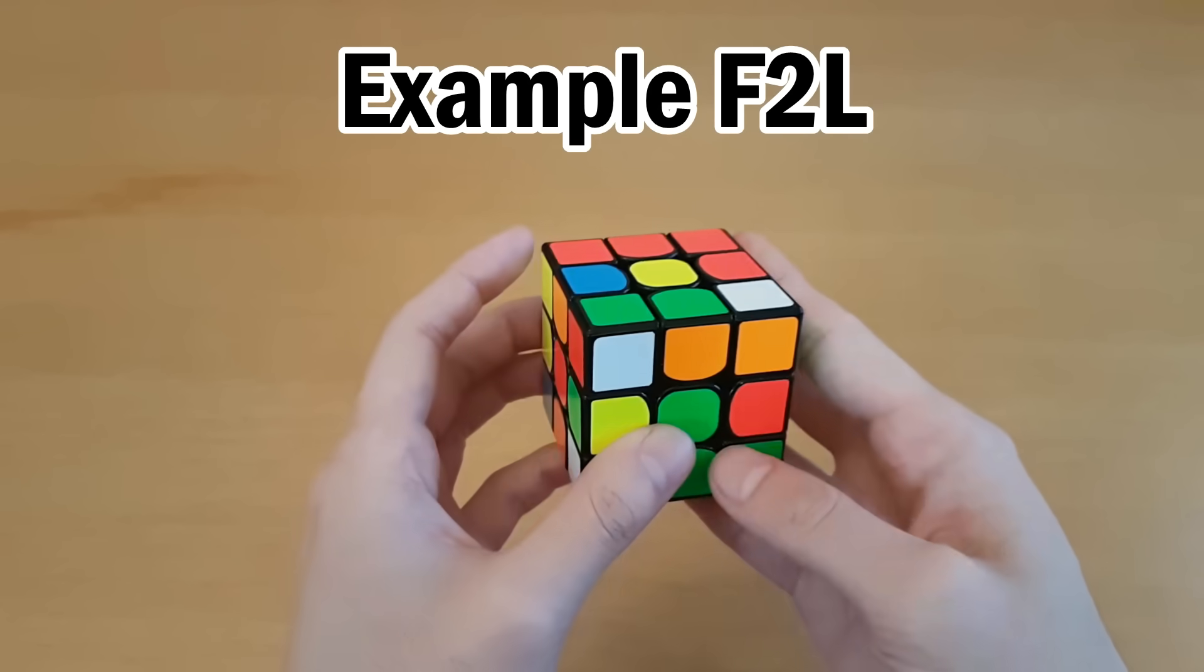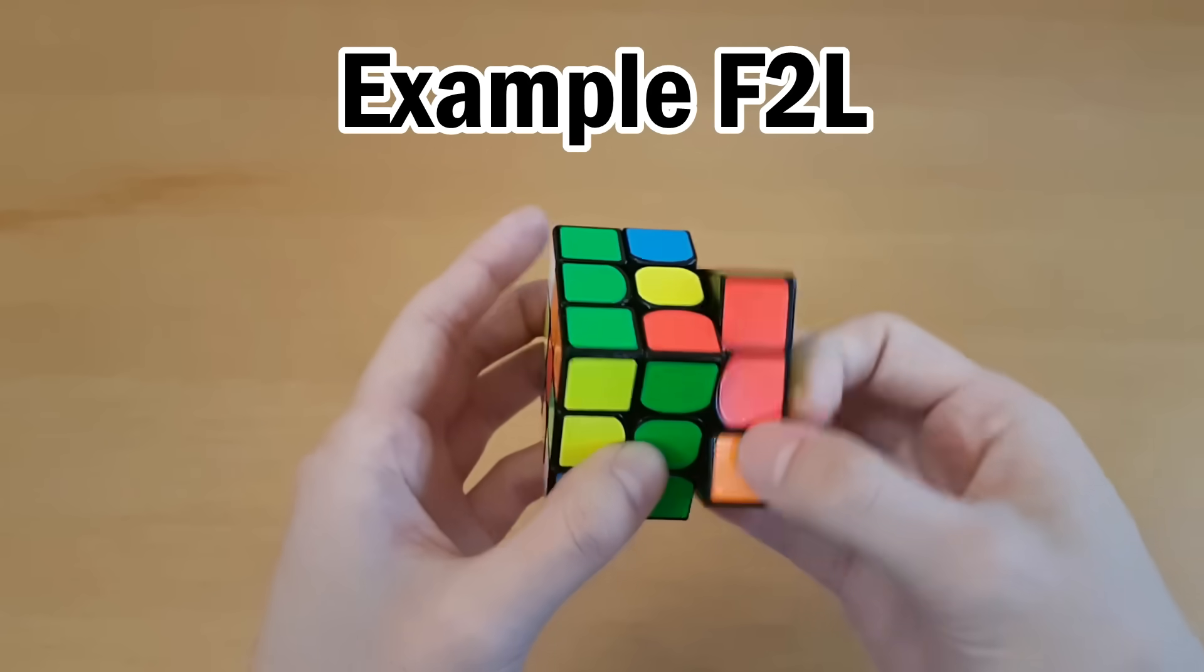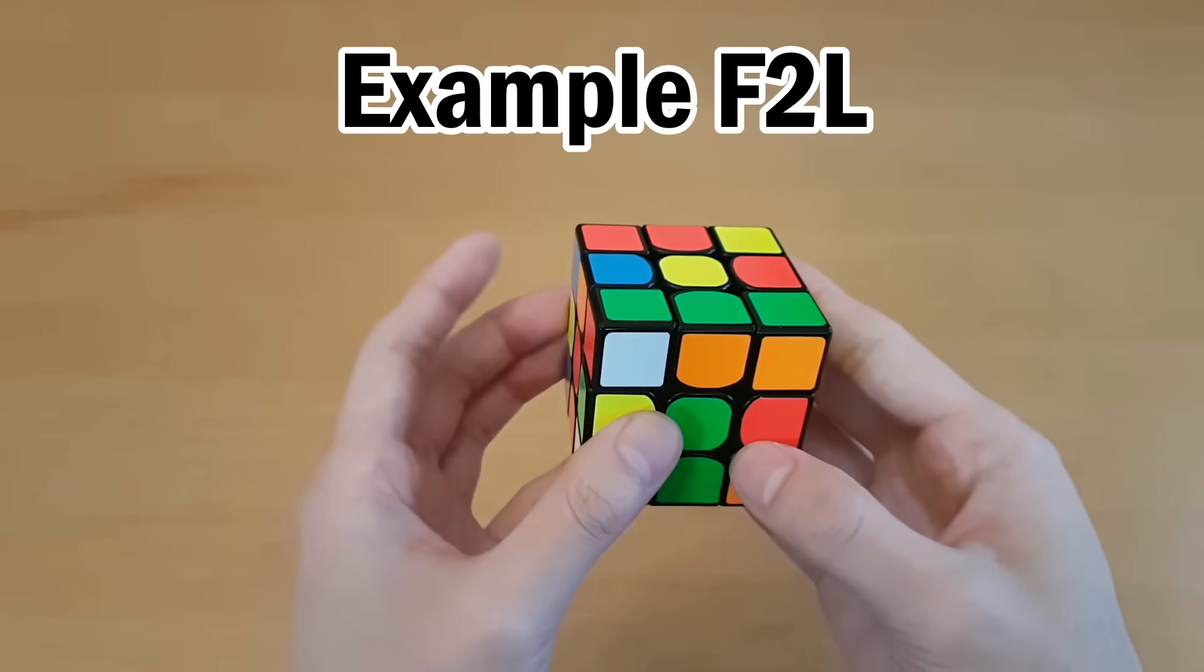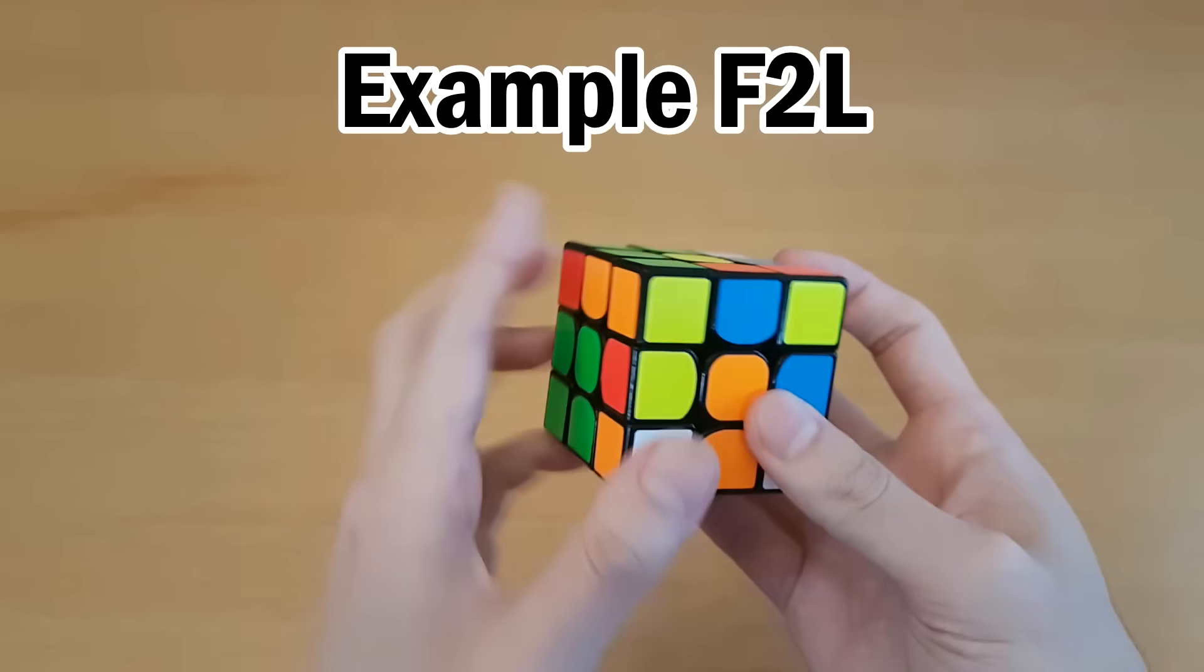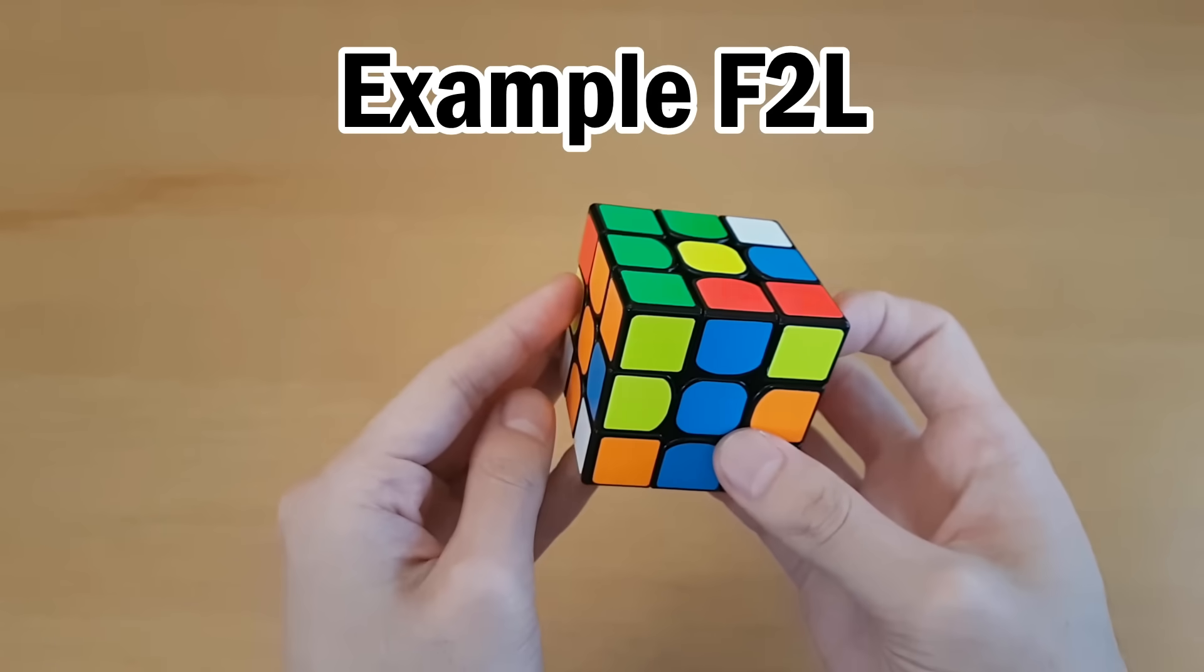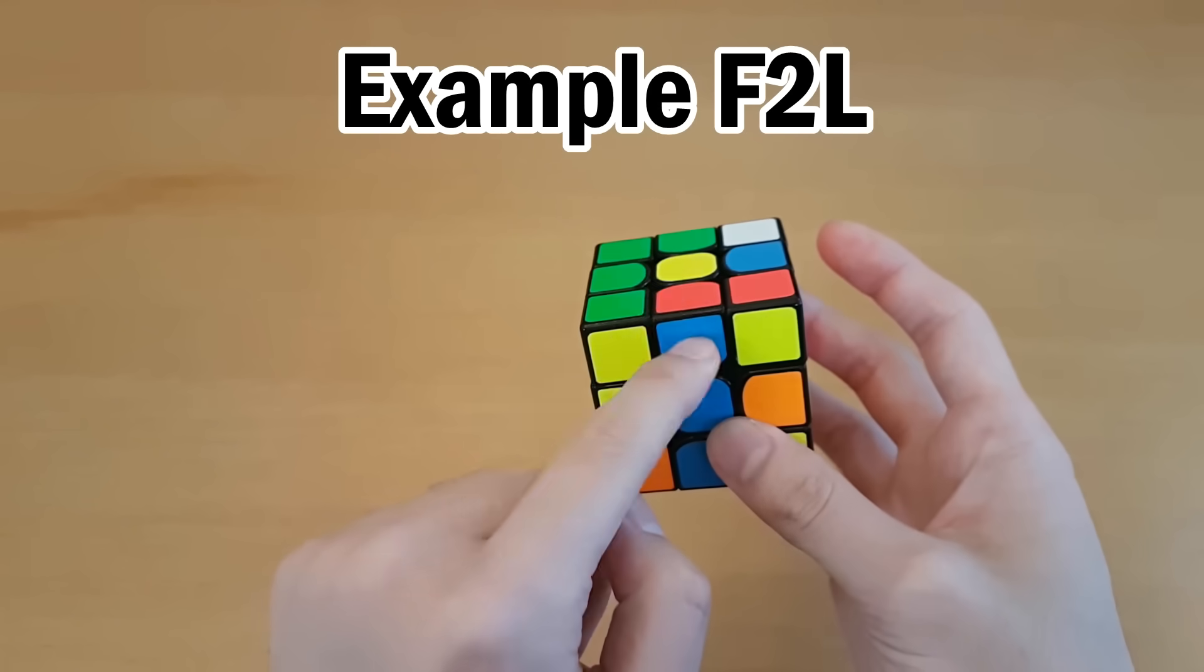Now here's the cross done, just an example F2L, with emphasis on all of the things that I talked about. So here I have these two, and I'm going to pair them like that, and then insert it into which way should I rotate, back slot. And then this one and this one, and I'm going to rotate, so I'm inserting into a back slot.